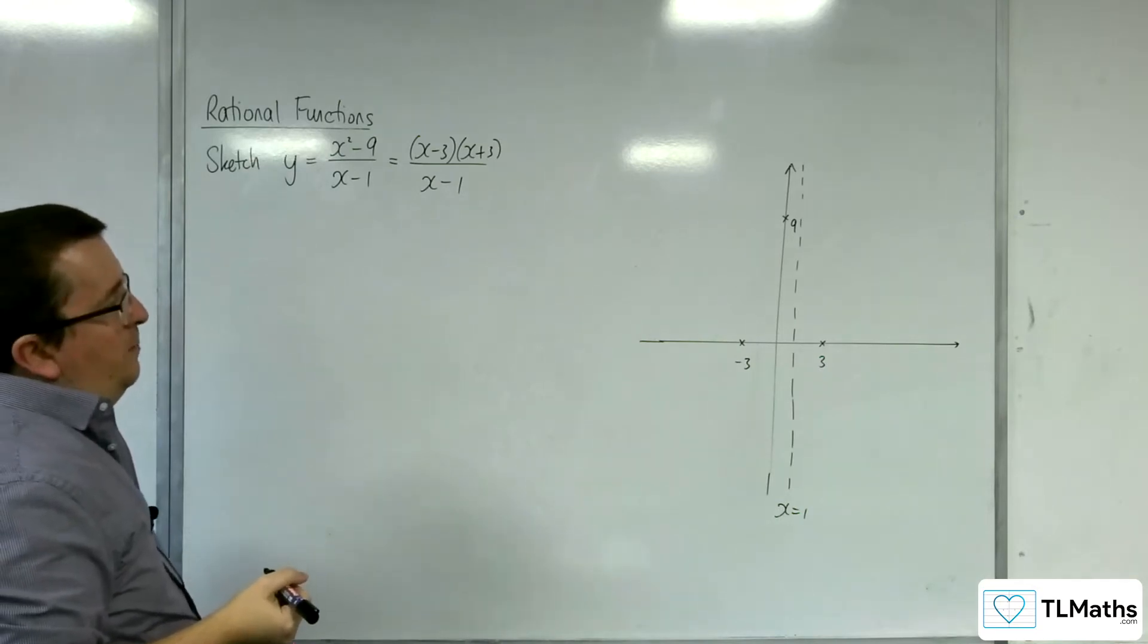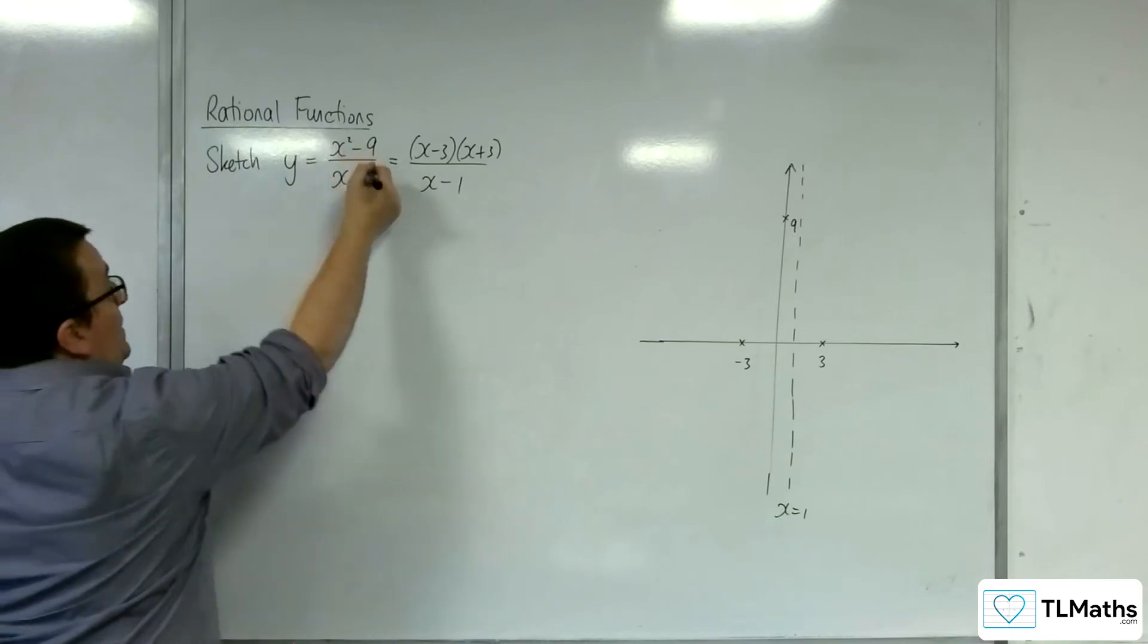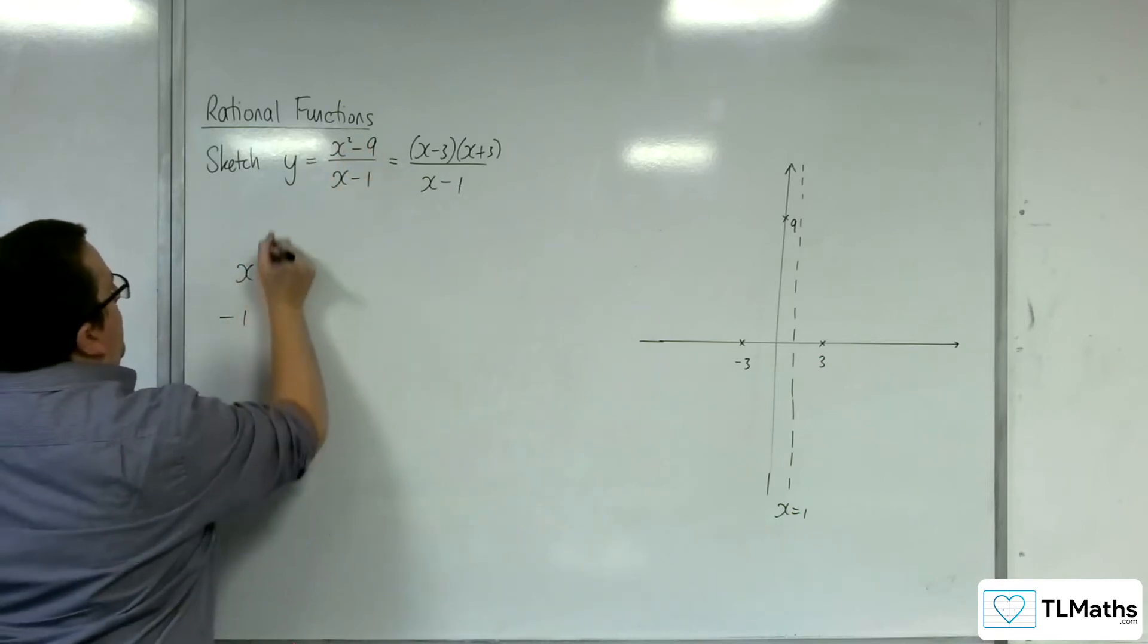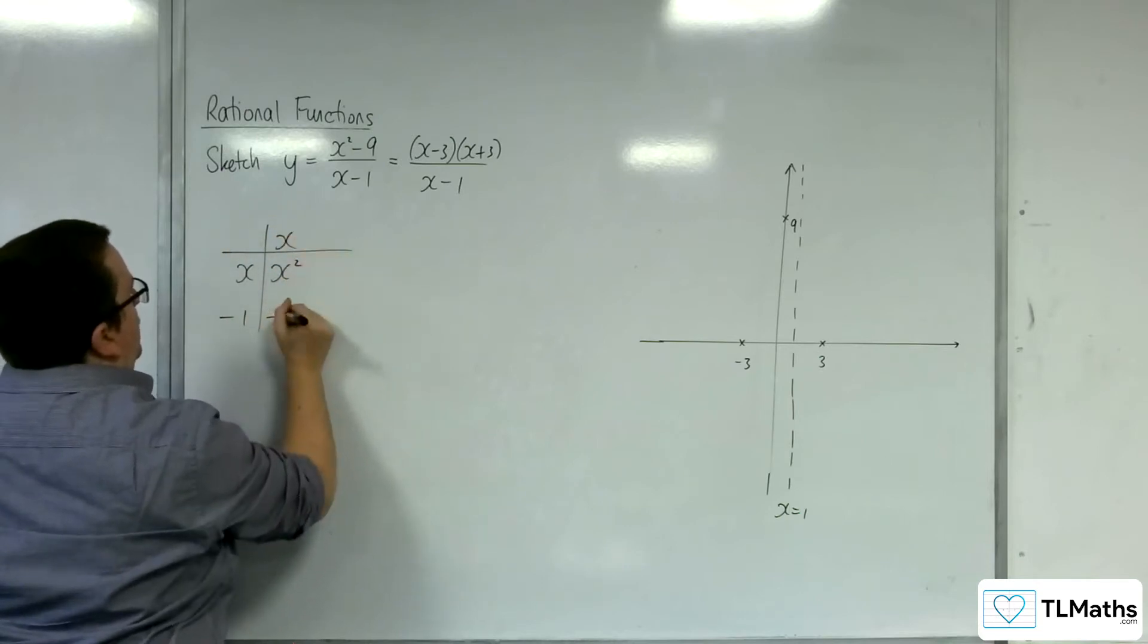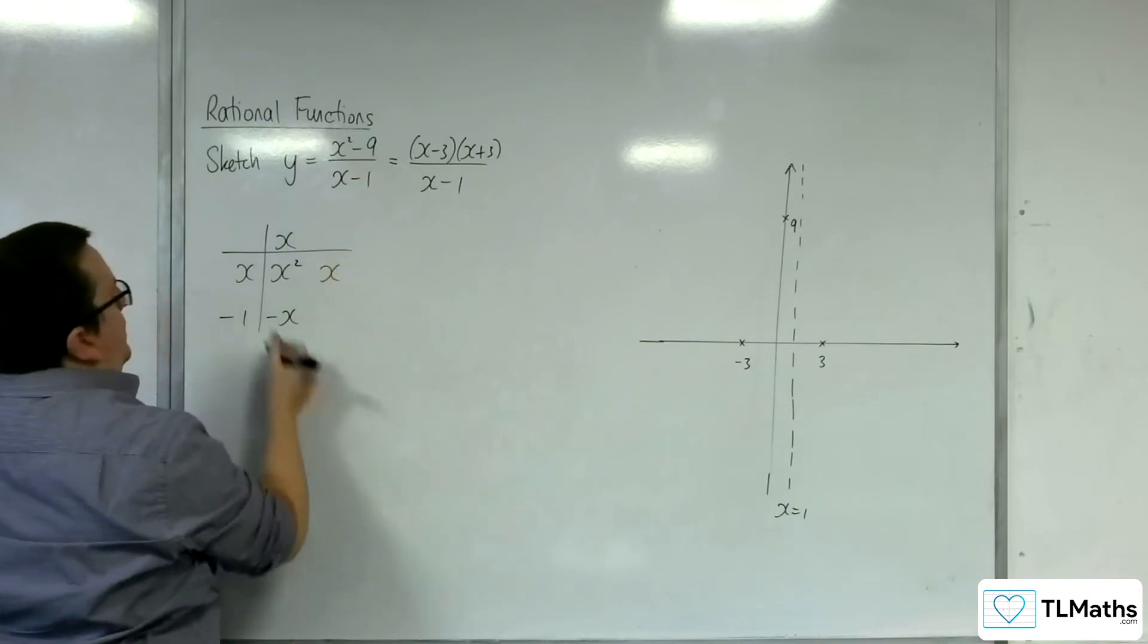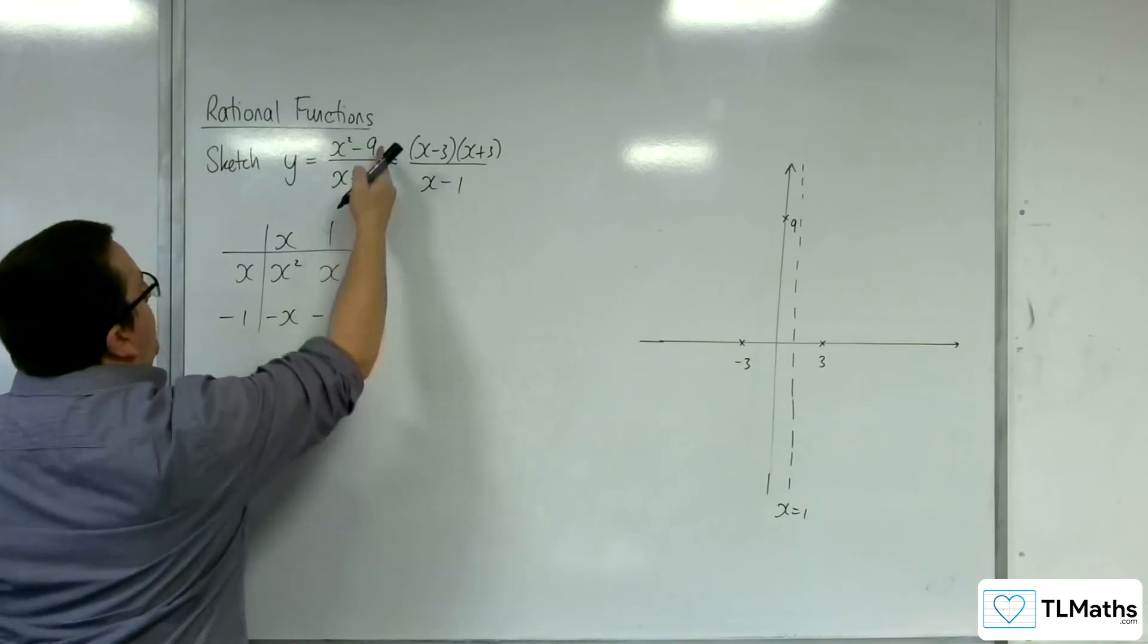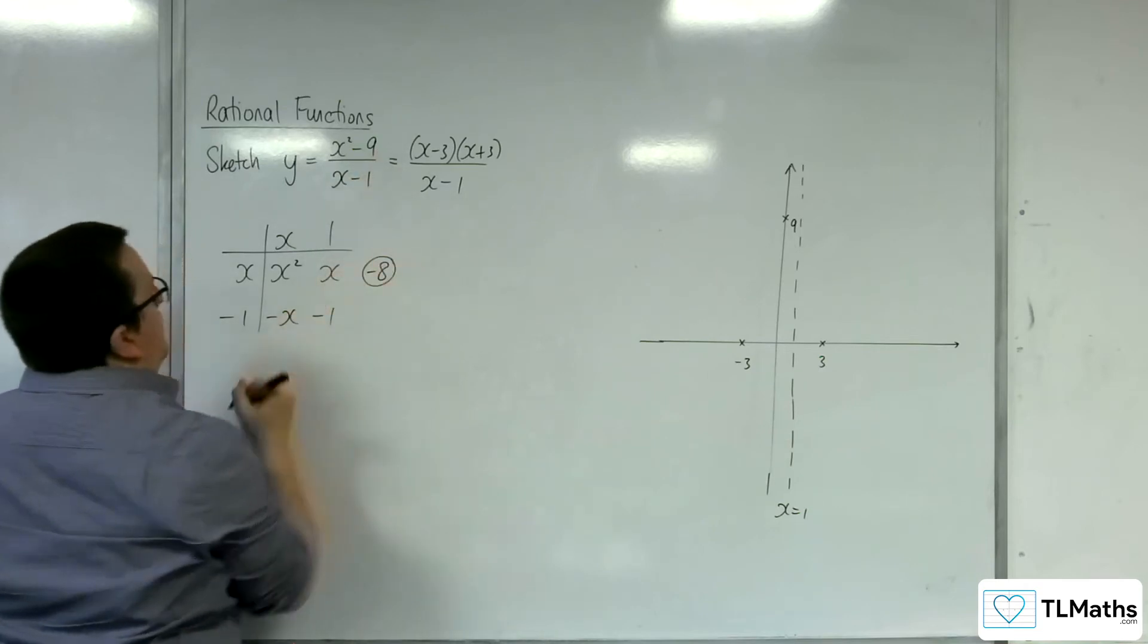And how about the oblique asymptote? So we're going to divide x squared by, x squared take away 9 divided by x take away 1. So x take away 1. We want the x squared, so that's got to be x, that's got to be minus x. So we don't want any x's, that's got to be x. x into x go once, 1 times minus 1 is minus 1. We want minus 9, so we're going to have to take away 8. So that's my remainder.